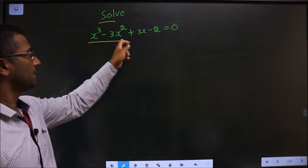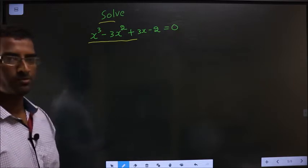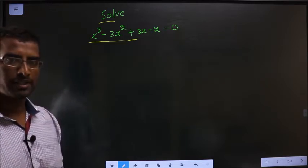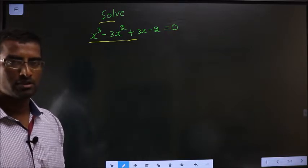Solve x cube minus 3x square plus 3x minus 2 equal to 0. They told you to solve, that means you need to find the values of x. Now how do we solve it?